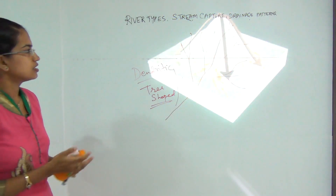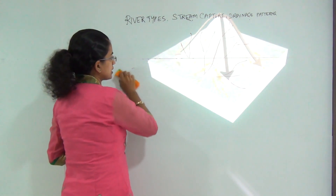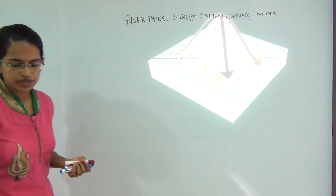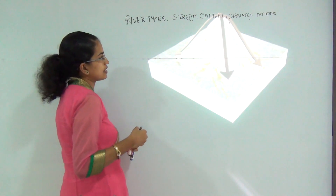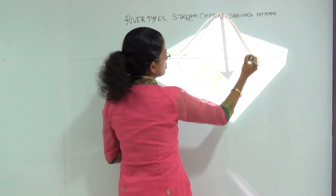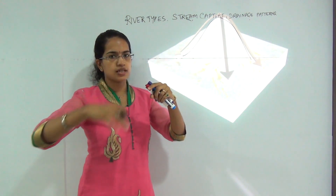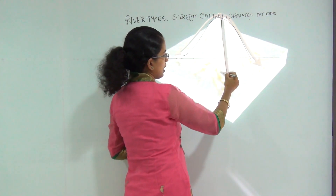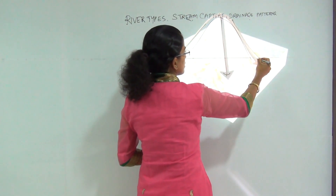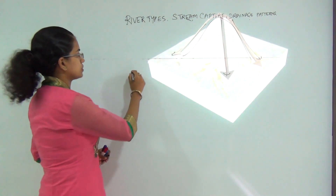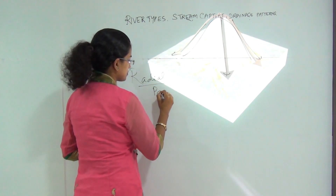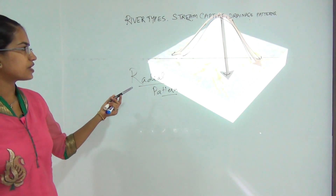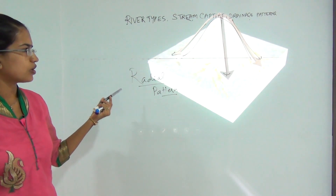The next is radial drainage, which is very dependent on structure and is usually common in volcanic mountain areas. From the top of the mountain, numerous rivers come down and flow out in various directions. This is known as the radial drainage pattern. A common example is Mount Etna and most other volcanic mountains.